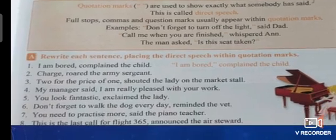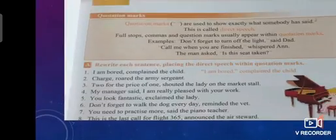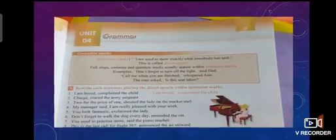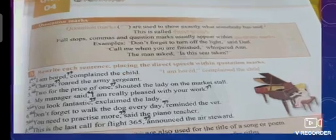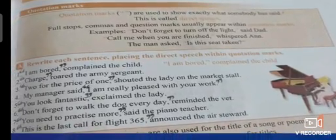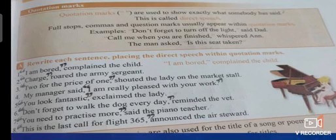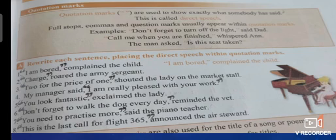Let's move to Exercise A to solve it. The question is: rewrite each sentence placing the direct speech within quotation marks. The first one is already solved. "I am bored," complained the child. "I am bored" is the exact wording of the child, so it is enclosed in quotation marks, and the comma comes within the quotation marks.